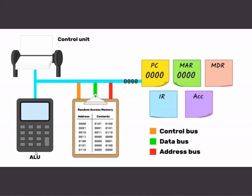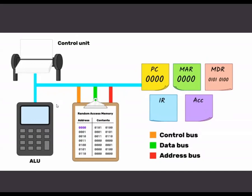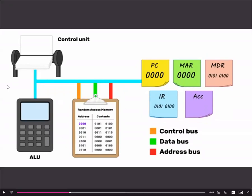A signal is then sent down to the address bus to the RAM. The control unit sends out a memory read signal, and the contents of the address 0000 are copied through the data bus to the memory data register. As the contents of address 0000 is an instruction, it is copied into the instruction register.